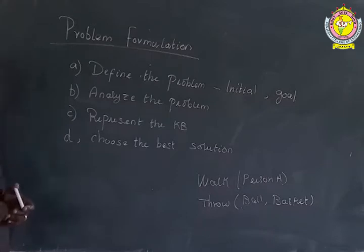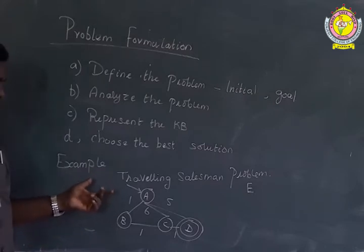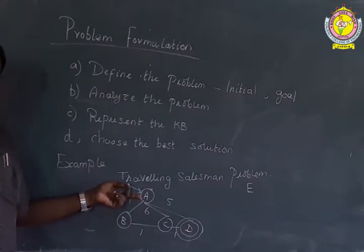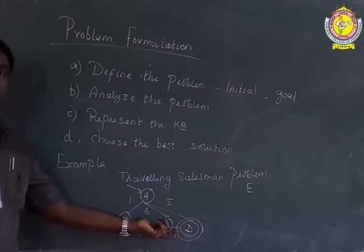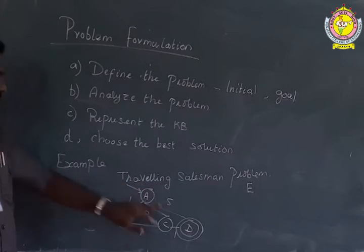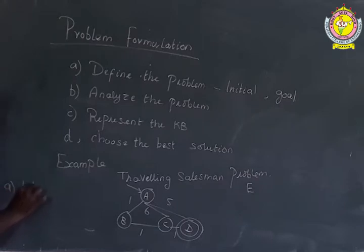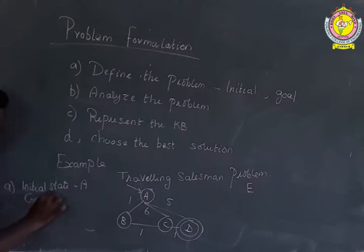Now we will see an example of formulating a problem using the traveling salesman problem. Here, A is the initial state and D is the goal state. A person standing at location A has to reach destination D. So the first step — defining the problem — is that the initial state is A and the goal state is D.